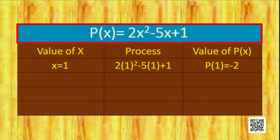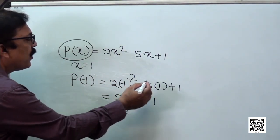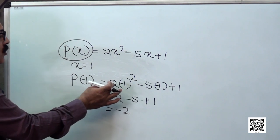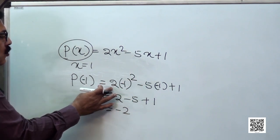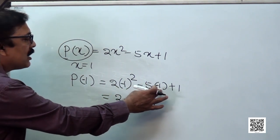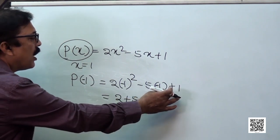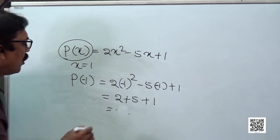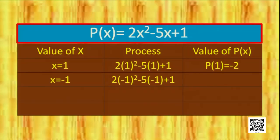Let's take the value of x as −1. Then: 2(−1)² − 5(−1) + 1. Minus 1 squared is 1, so 2 × 1 = 2. Then −5 × (−1) = +5, plus 1. So 2 + 5 + 1 = 8. For x = −1, the value of the polynomial is 8.